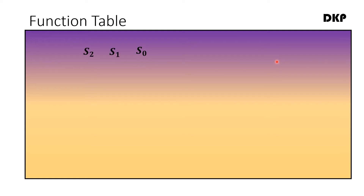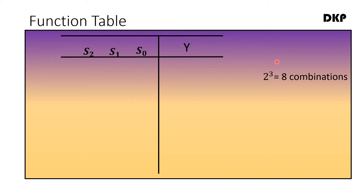Now let us write the function table of the 8-to-1 multiplexer. Here there are 3 variables — 3 select lines S0, S1, S2 — and 1 output Y. Since there are 3 variables, there will be 2 to the power of 3, which equals 8 combinations of 0s and 1s. These 8 combinations can be written in decimal form as 0, 1, 2, 3, up to 7. Now you have to write this in binary.